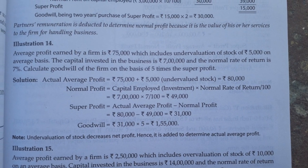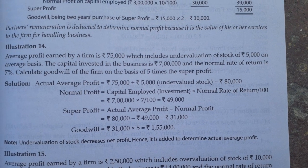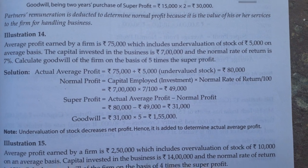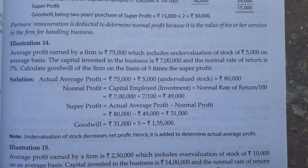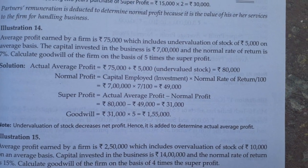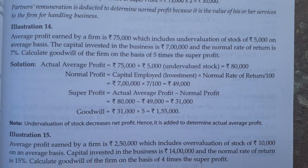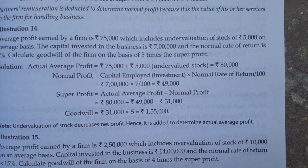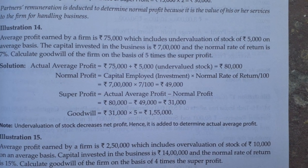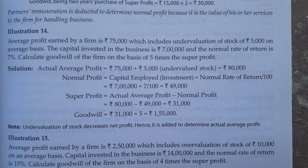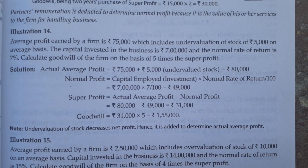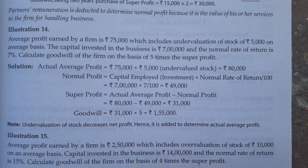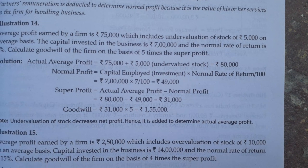The first step is calculation of actual average profit. The average profit given is 75,000, but we have to add 5,000 because it is written that this 5,000 is undervaluation of stock. An undervaluation of stock decreases net profit, which is the reason we have to add it back. So our actual average profit is 80,000.